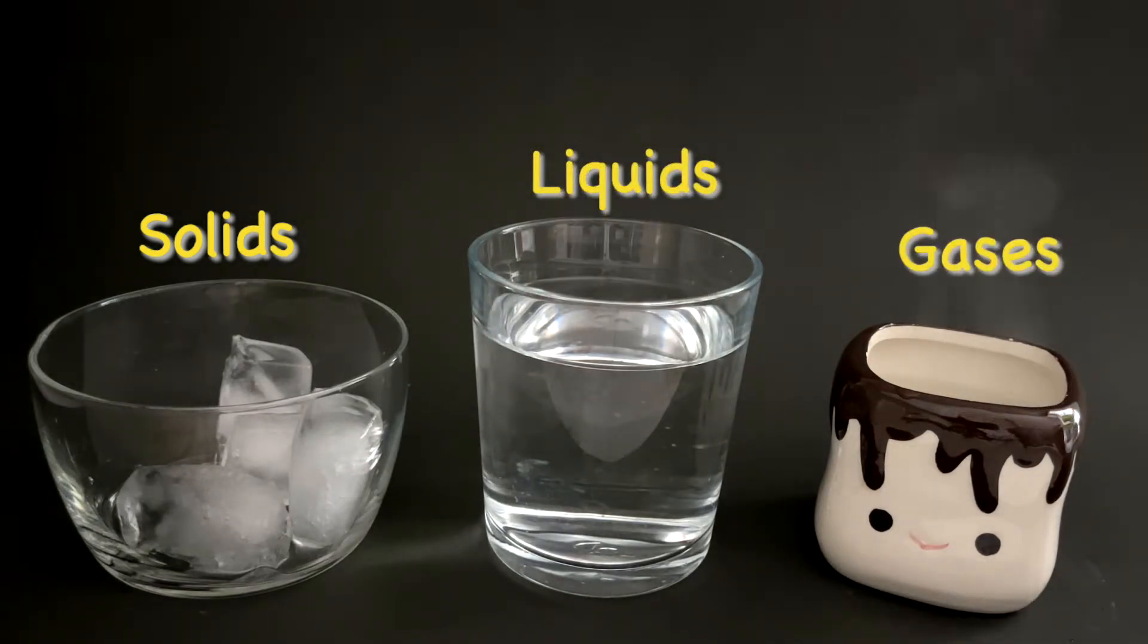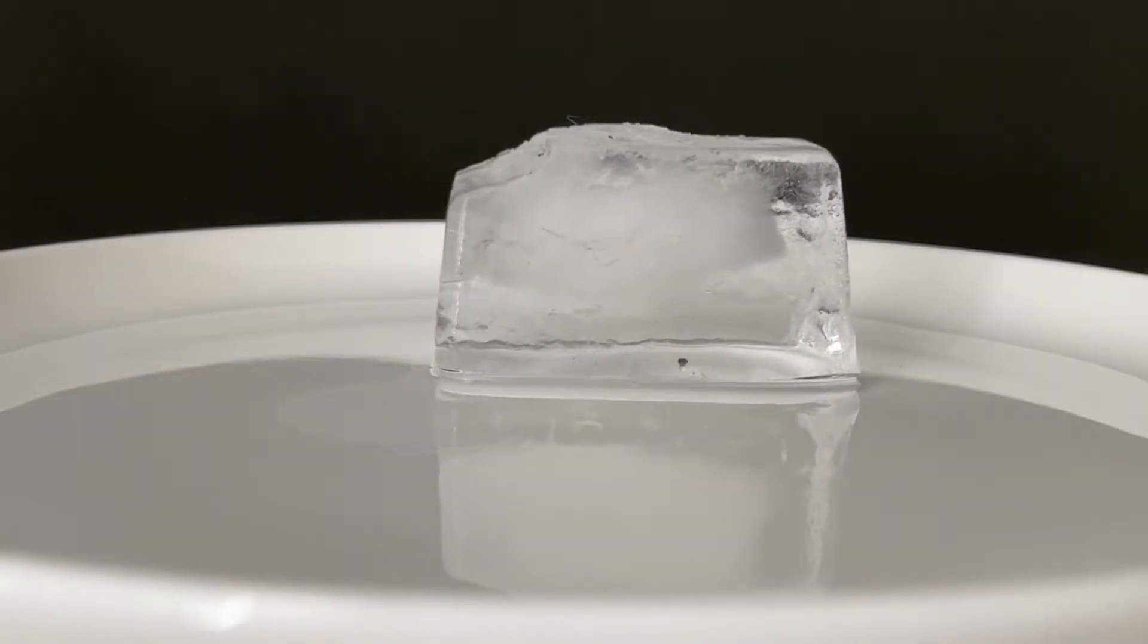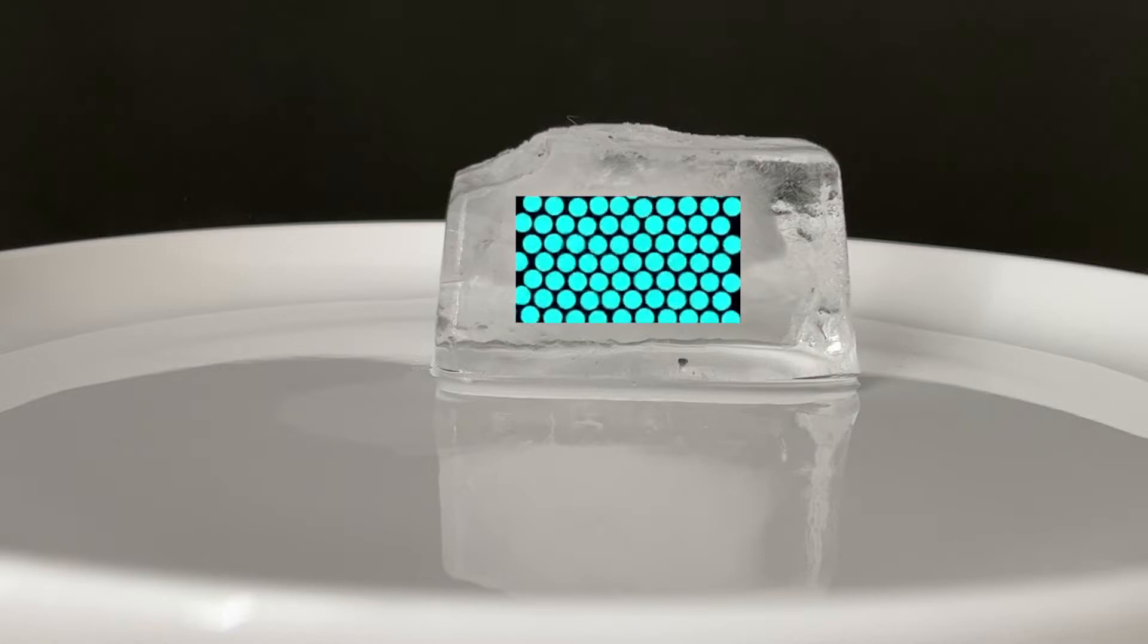The properties that we see and observe come from the underlying structure of each state of matter. A solid, such as this ice cube, is able to hold its shape. It's said to have a definite shape.